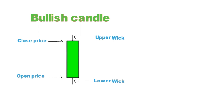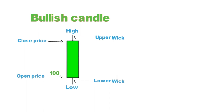What does the wick tell us? It tells us very important data. The topmost part of the wick says that is the highest price that share moved in a particular time frame, and the bottom wick says that is the lowest price it touched in a particular time frame. Assume in this green candle: price opens at 100, closes at 120, high point goes to 130, and low point touches 90.